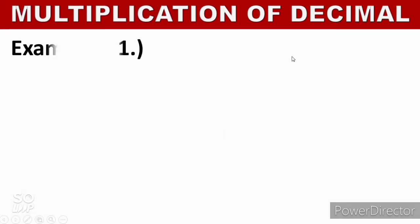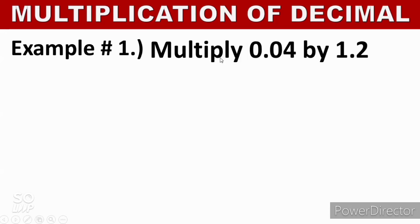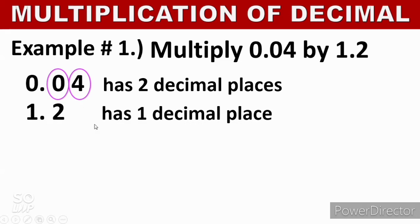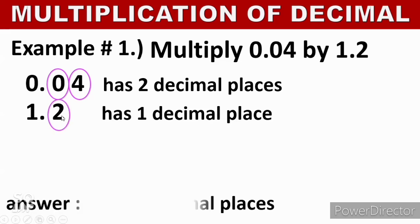Next, we're going to proceed to the multiplication of decimals. Example 1: multiply 0.04 by 1.2. 0.04 has 2 decimal places — we have 0 and 4. 1.2 has 1 decimal place. So the expected answer must have 3 decimal places.